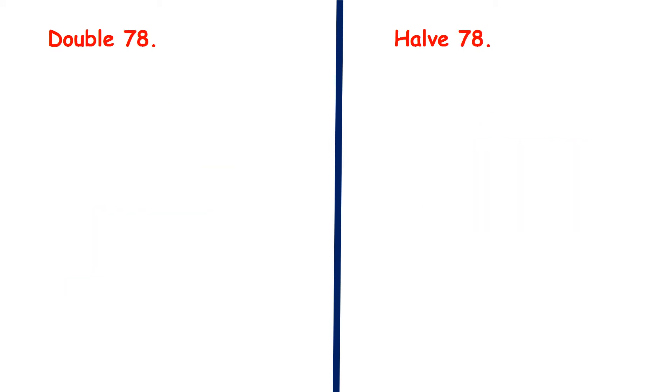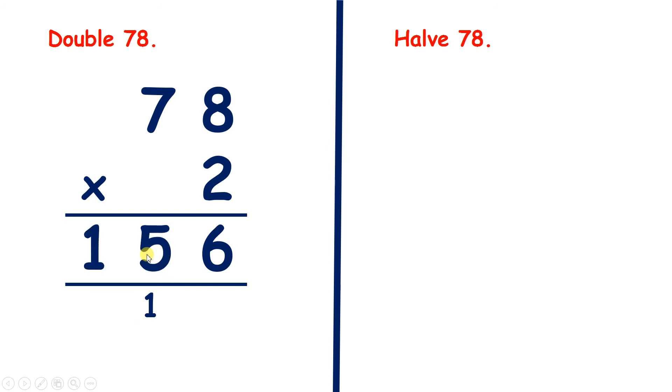Now pause the video and double and halve 78. If we have 78 times 2, we start with 8 times 2, which is 16, so we have 1 under our tens and 6 in our units. 7 times 2 is 14, plus 1 is 15. So double 78 is 156.